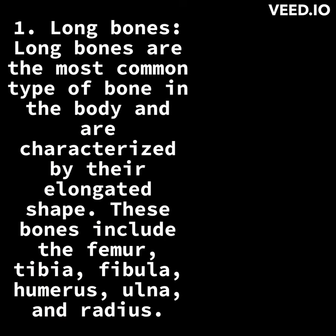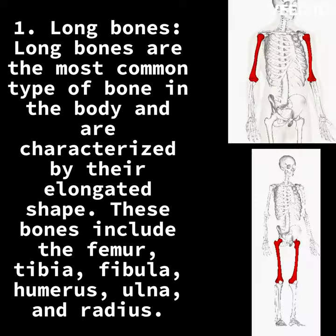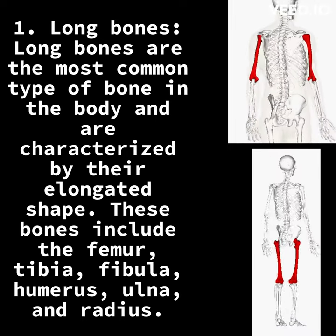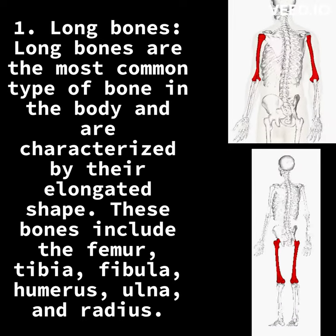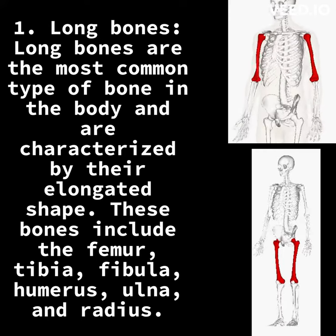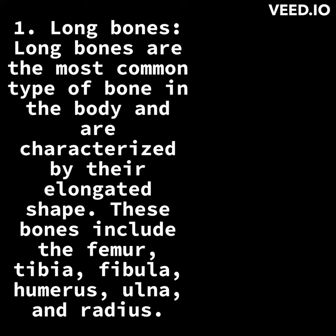1. Long bones. Long bones are the most common type of bone in the body and are characterized by their elongated shape. These bones include the femur, tibia, fibula, humerus, ulna, and radius.